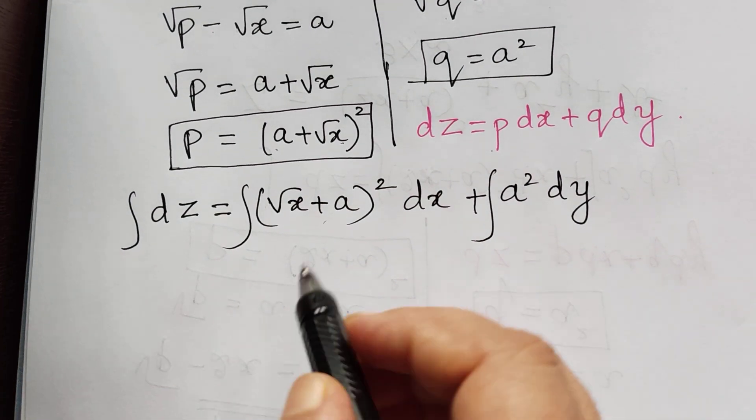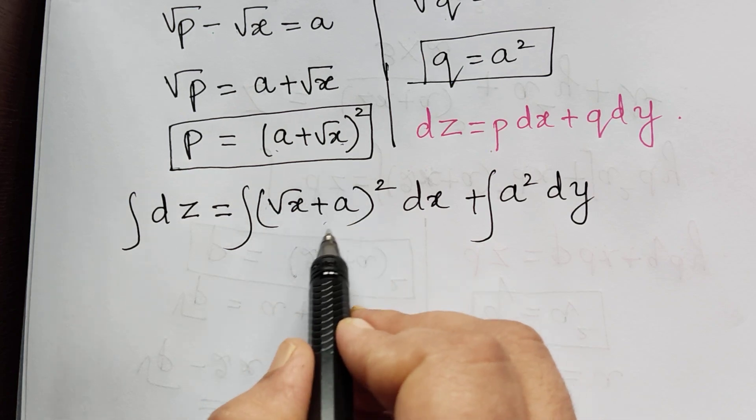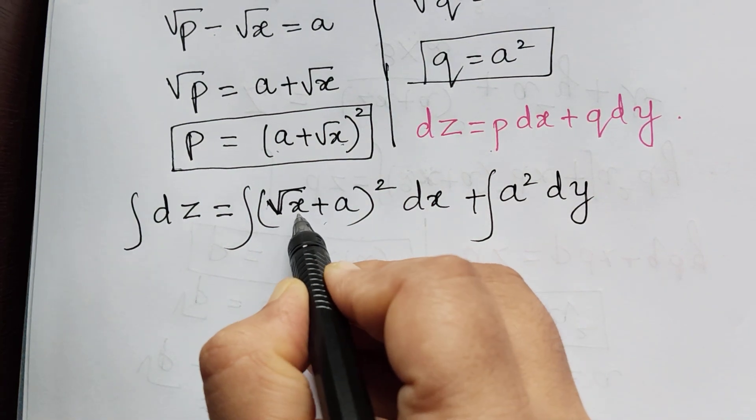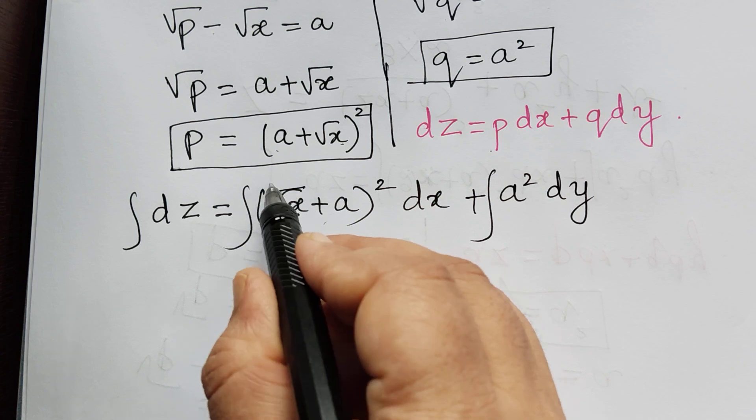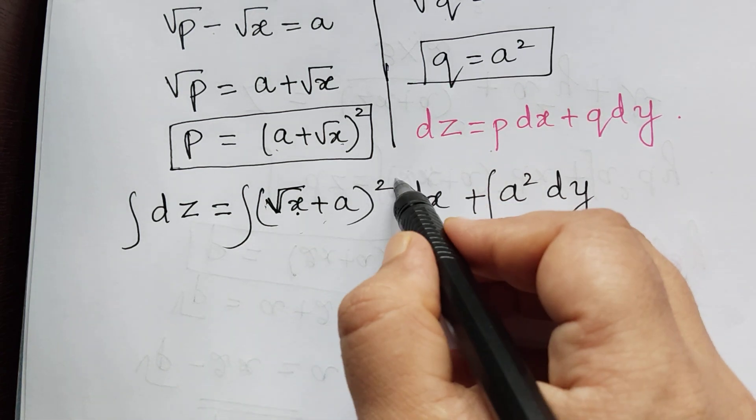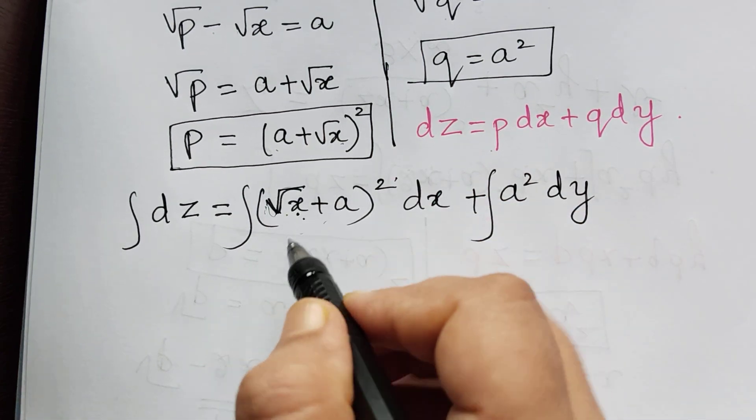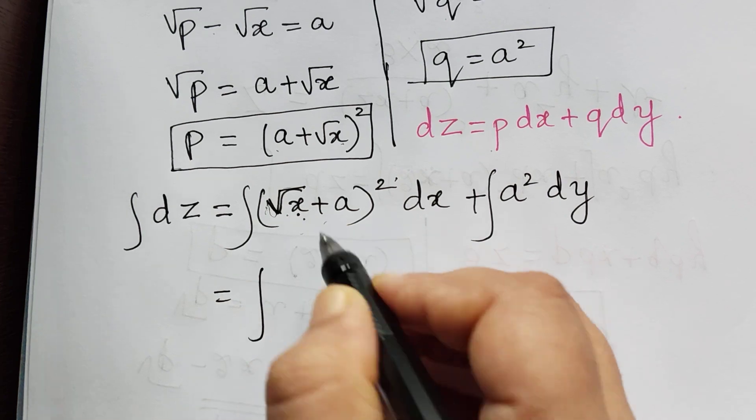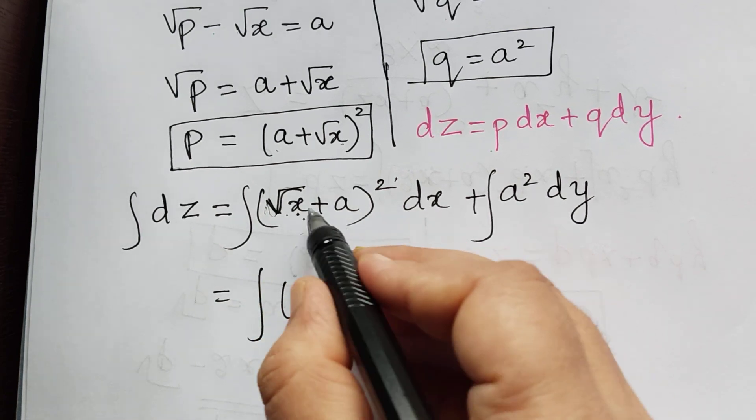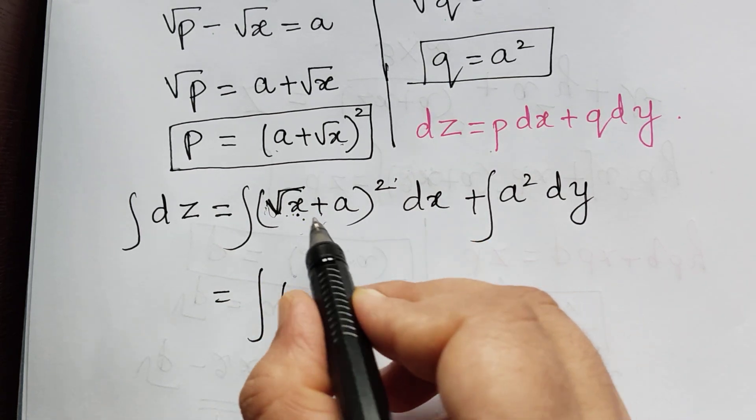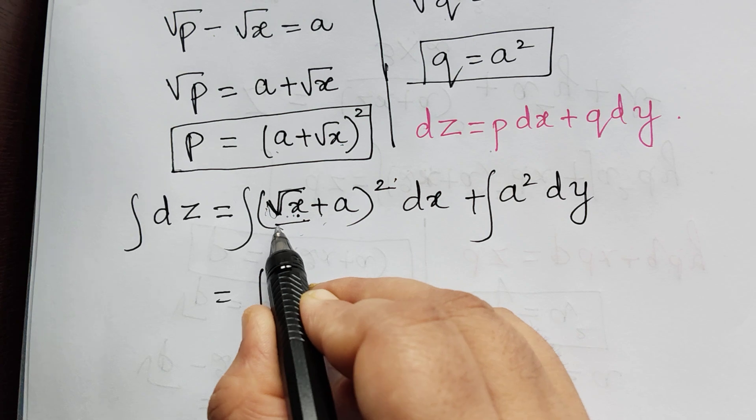So before integrating, we will expand this term because we have square root of x inside. So we cannot just like that use the formula x power n since we have root x over here. So right side will be on expanding, we will use a plus b, the whole square. So if we use that formula,